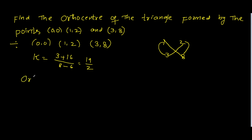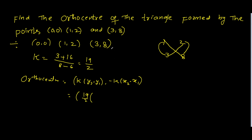So now orthocentre is equal to k into (y2 minus y1) comma minus k into (x2 minus x1). Here the k value is 19/2 into (y2 minus y1) that is (8 minus 2), comma minus 19/2 into (x2 minus x1) that is (3 minus 1). That is 19/2 into 6, comma minus 19/2 into 2.